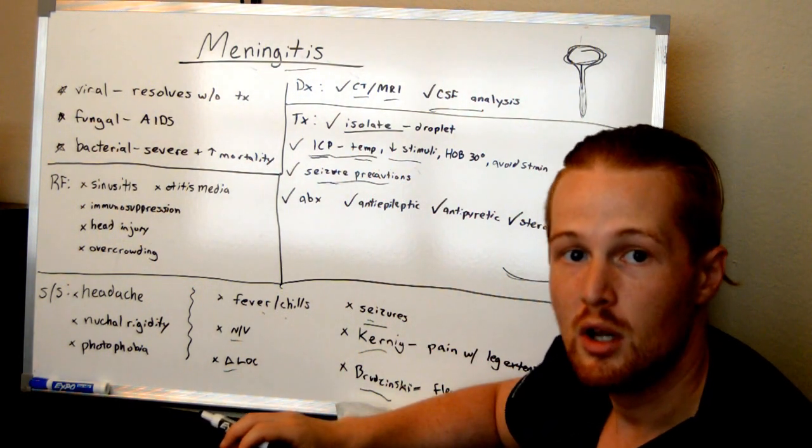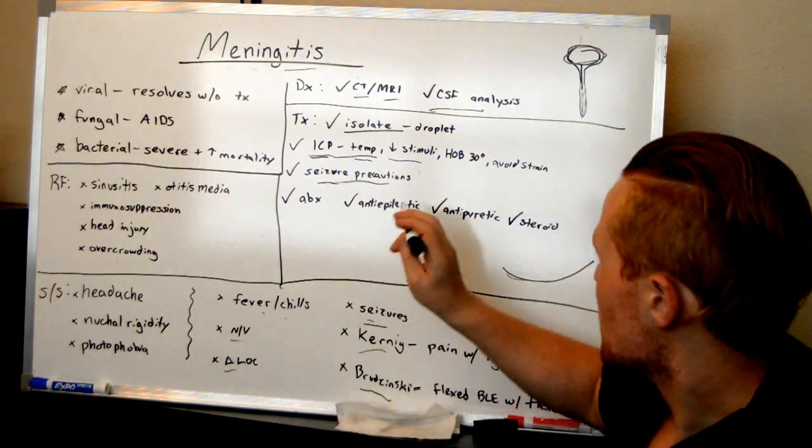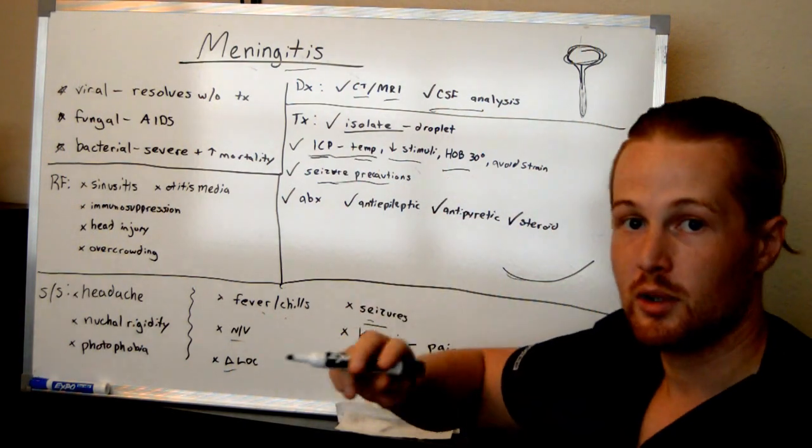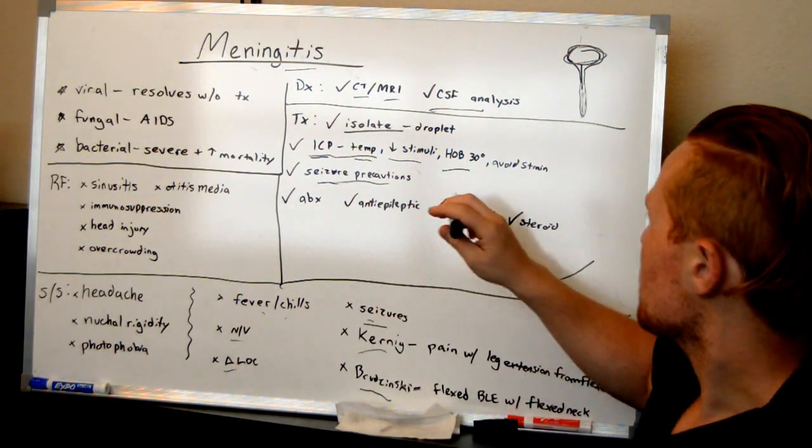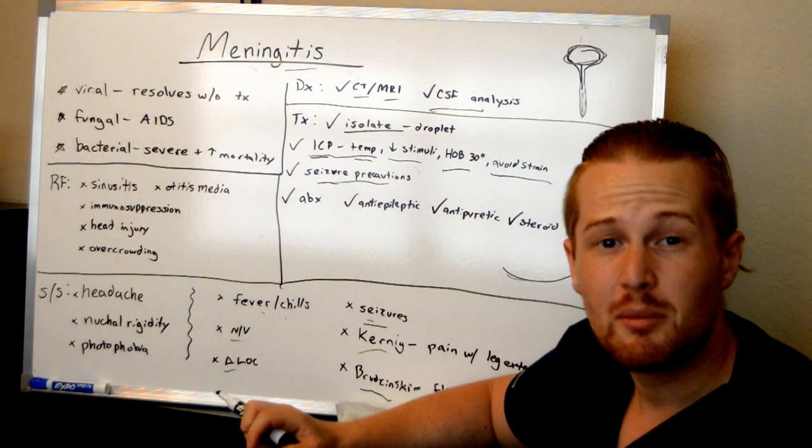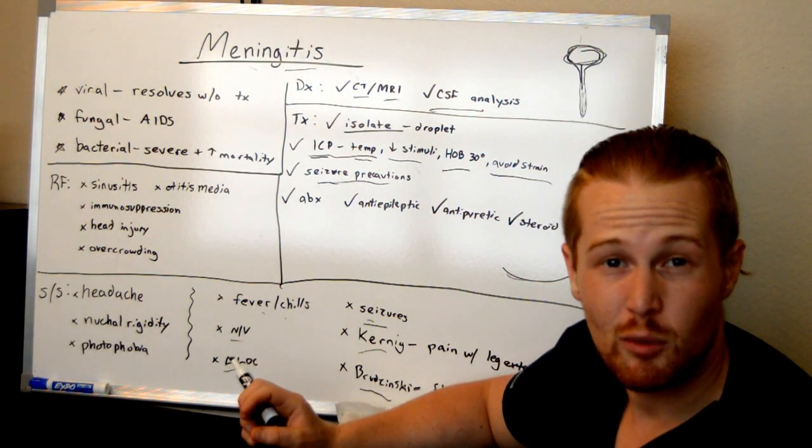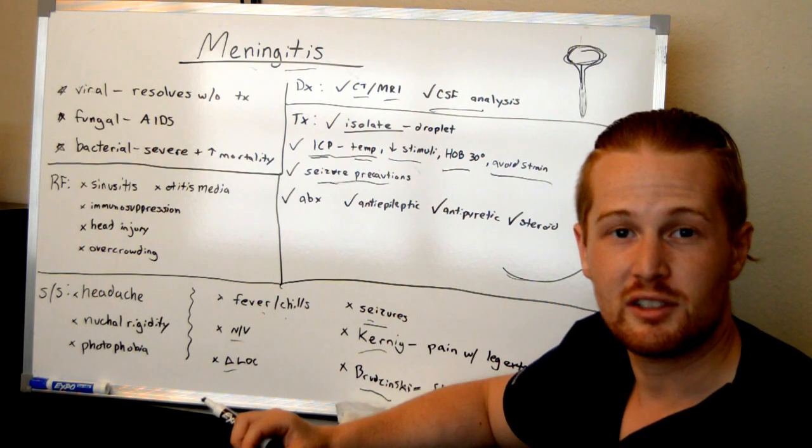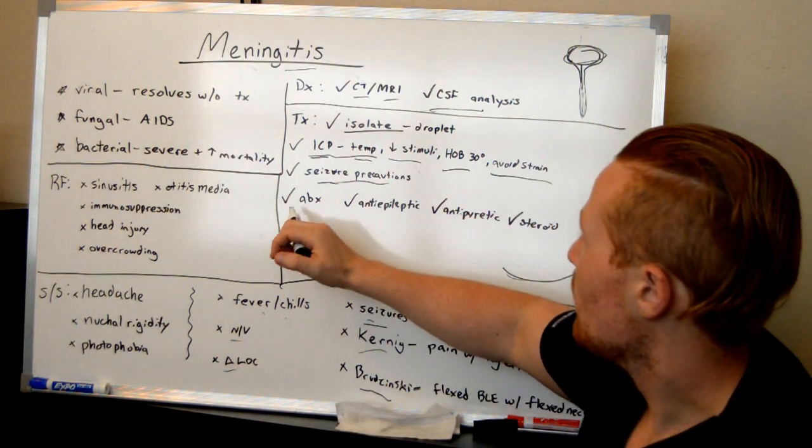Decrease the stimuli. Turn the lights down low and don't have a lot of loud sounds. Keep the head at about 30 degrees to have good blood flow around the brain. And you want to have them avoid straining. You don't want them being constipated. You may need to give them a laxative or whatnot. And you don't want them coughing and sneezing a whole lot.